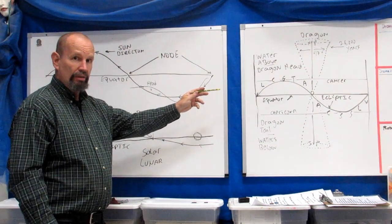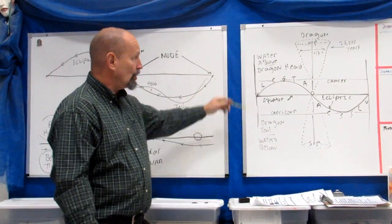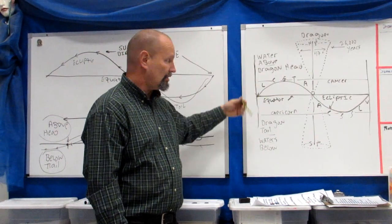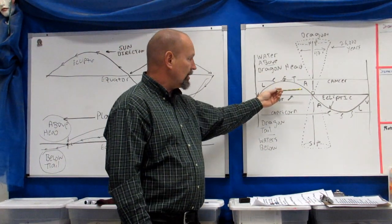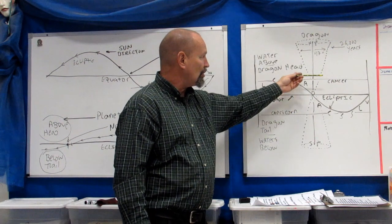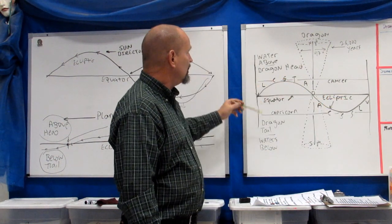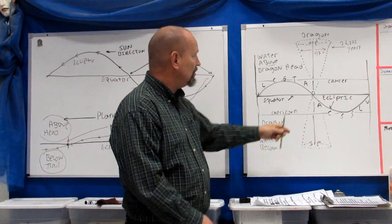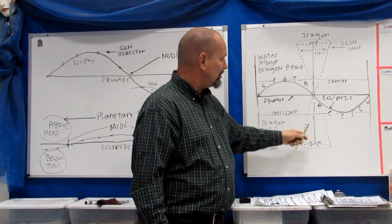We come over to this chart here by way of review. If you haven't seen this in the previous videos, please look at the previous videos. Here's our equator, Tropic of Capricorn, Tropic of Cancer, our ecliptic line, waters above the dragon head, waters below the dragon tail.